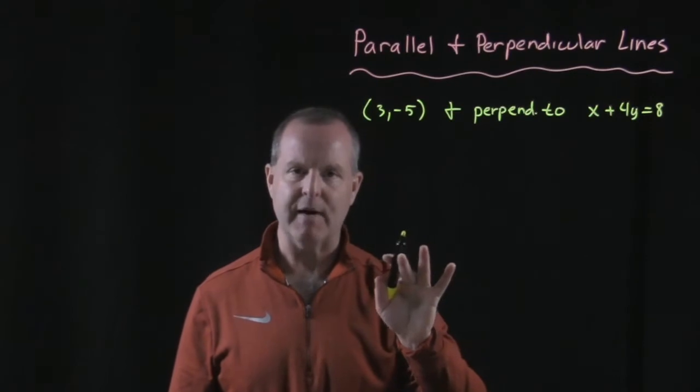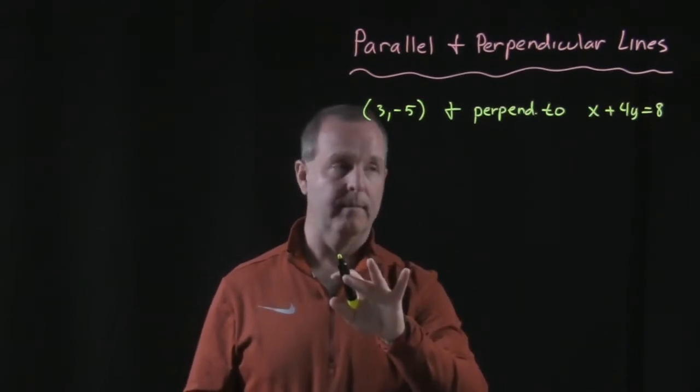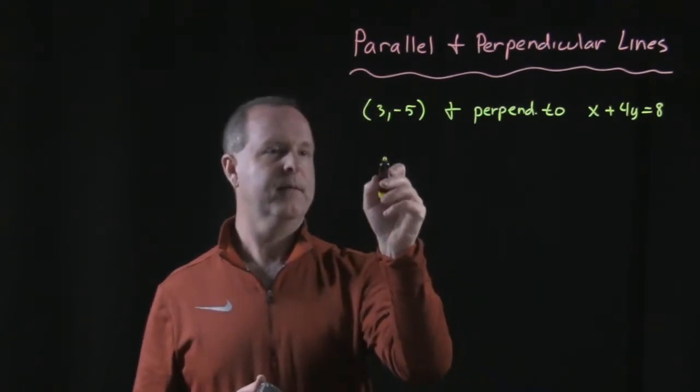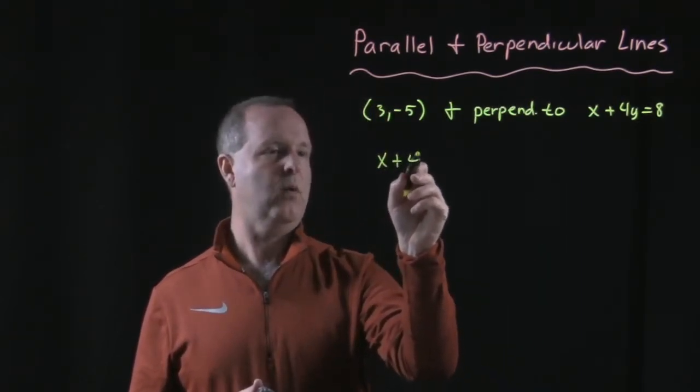And the slope I can identify if it's written in slope-intercept form. You're right. So let's go ahead and write that first. So I have x + 4y = 8. Solve that for y, which is slope intercept form.